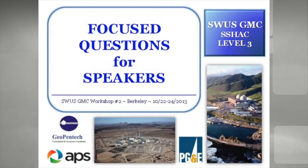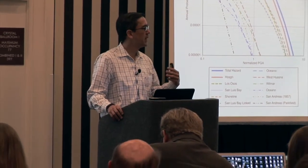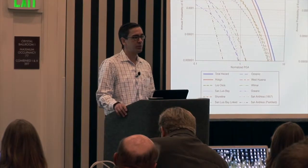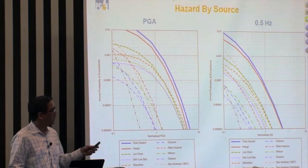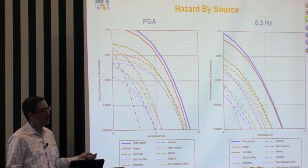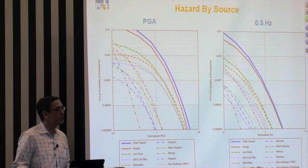If I want to step back first, what goes into the hazard will be not only the ground motion part, but like Norm said, there's a whole group and studies going on to develop the source model. If we look at what I presented at the first workshop in terms of what are the significant sources to Diablo Canyon, this shows a plot of two sets of hazard curves. On the left, we've got the PGA hazard curves; on the right, we have half a hertz or two seconds.